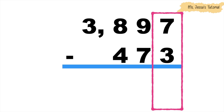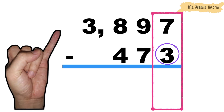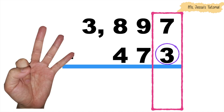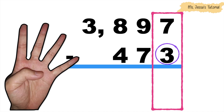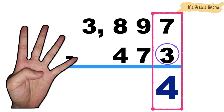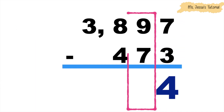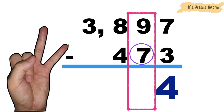7 minus 3: 3 on your mind, we're going to count forward from 3 until we reach 7. 3, 4, 5, 6, 7. So 7 minus 3 is equal to 4. Let's proceed to the tens place. We have 9 minus 7. 7 in your mind. 7, 8, 9. So the difference of 9 and 7 is 2.